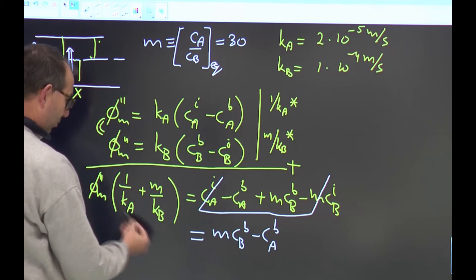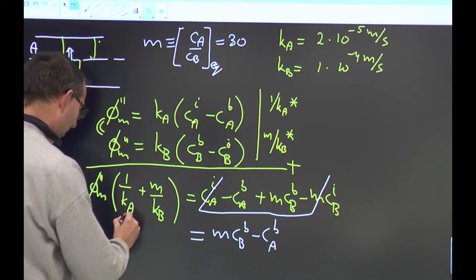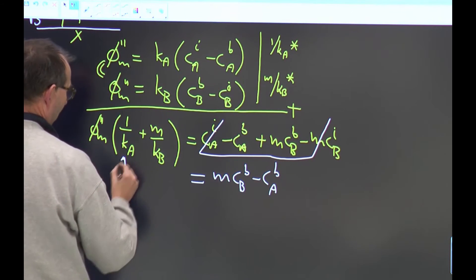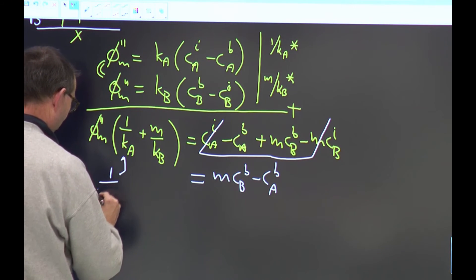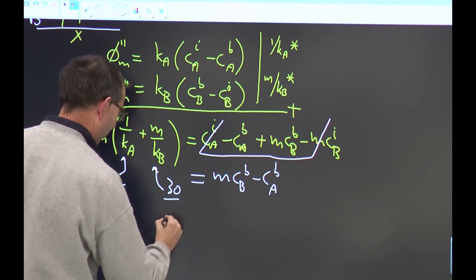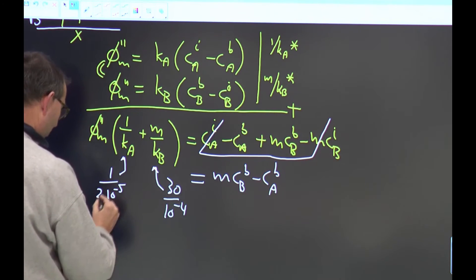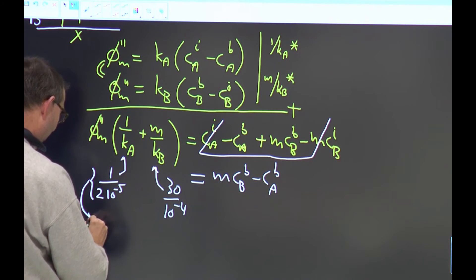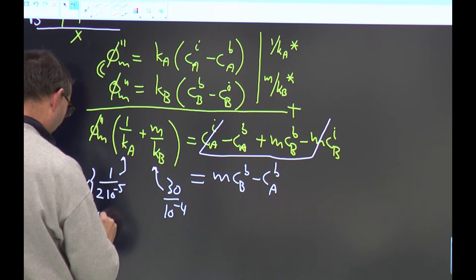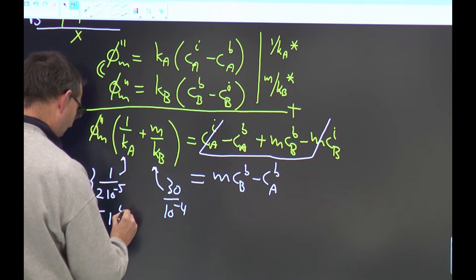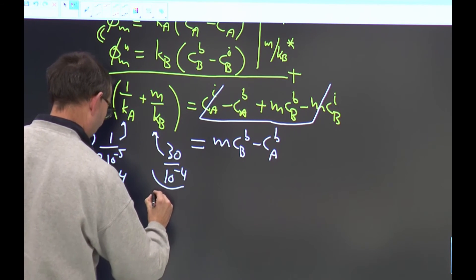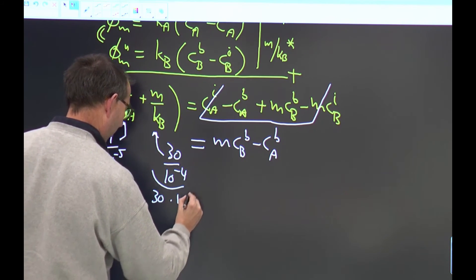Do we know about the resistance? This one has a value: that is 1 over 2×10⁻⁵, and this one is 30 over 10⁻⁴. So this gives me on the A side a resistance—it's half 10⁻⁵, which is 5×10⁴ in SI units—whereas this one is going to be 30×10⁻⁶... Conclusion: the resistance on the B side is 6 times higher than on the A side.